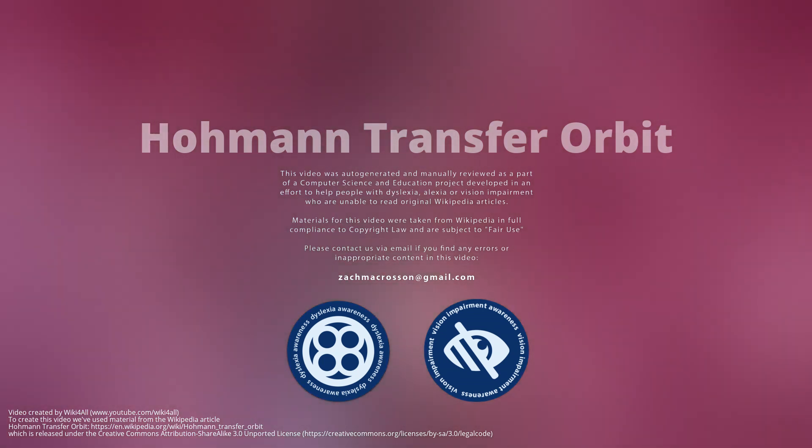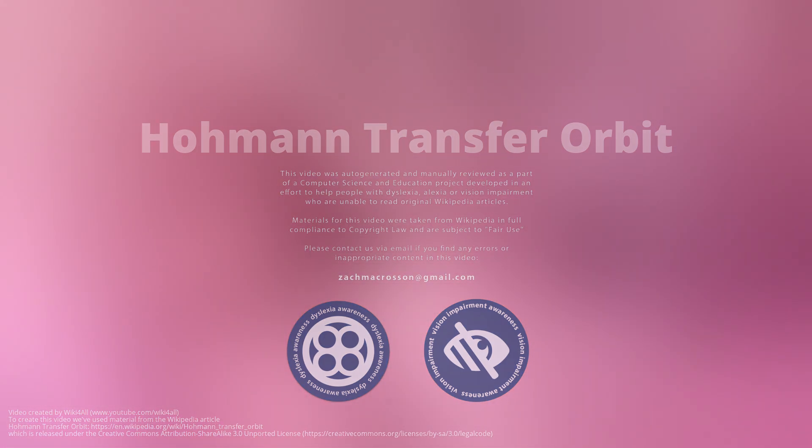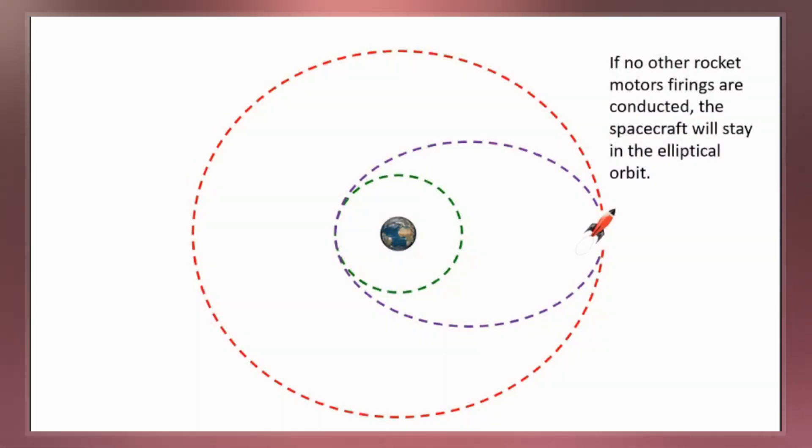In orbital mechanics, the Hohmann transfer orbit is an elliptical orbit used to transfer between two circular orbits of different radii around a central body in the same plane.